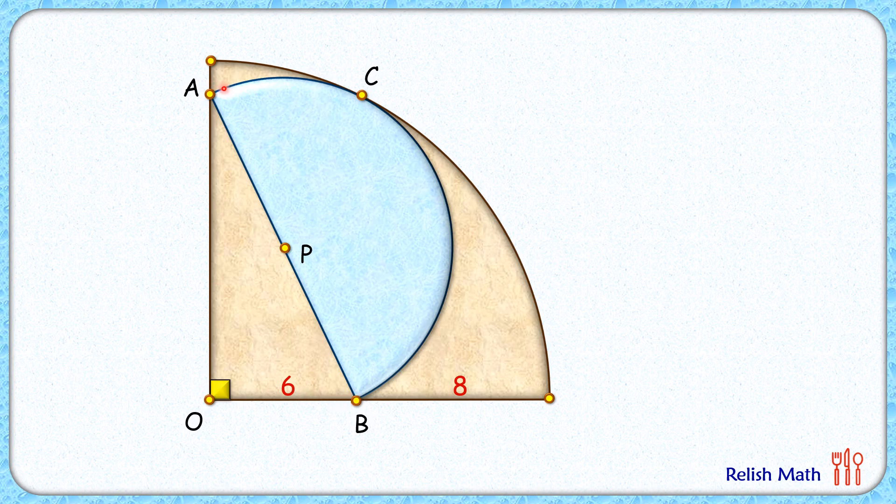And by theorem we know that if we draw a circle it will pass through point O.